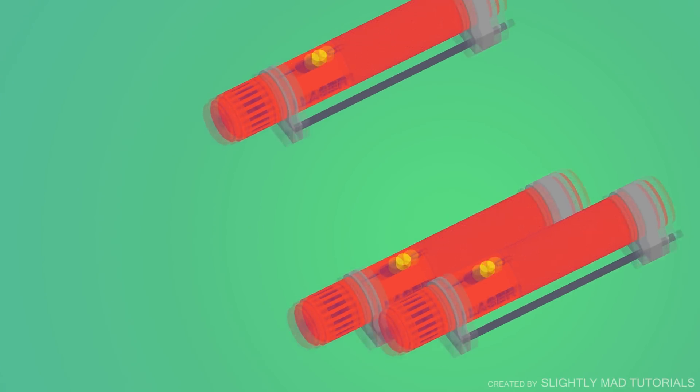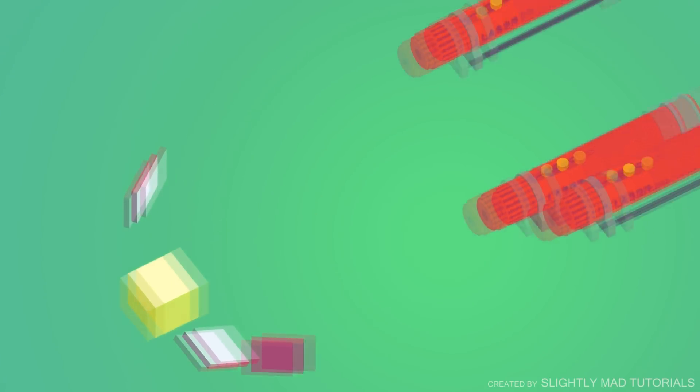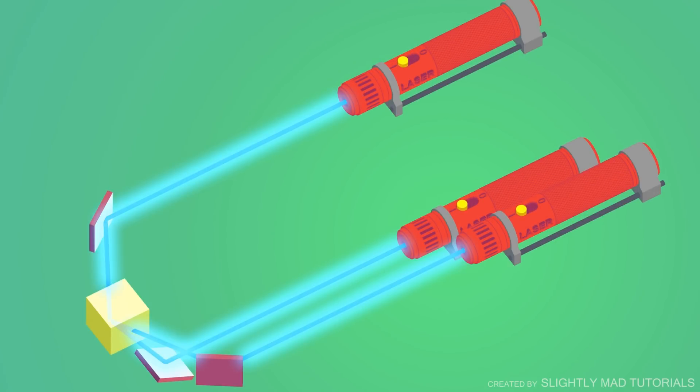In front of the lasers, there are three mirrors. These mirrors will redirect the laser beam into a lens. Within the lens, is yellow phosphorous. When the lasers are activated, all three beams will hit the phosphorous inside the lens. And as a result, a bright light will be emitted.